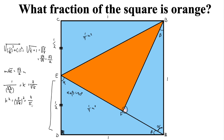That would mean the area of triangle ABF would be 4 fifths of that of triangle ADE. So all we need to do is multiply the area of triangle ADE, which is 1 quarter, by the ratio of similarity of the areas — 4/5. The 4s cancel out, giving us 1 fifth square units.